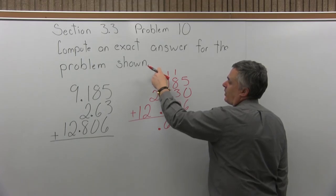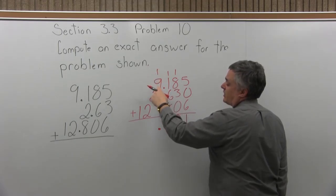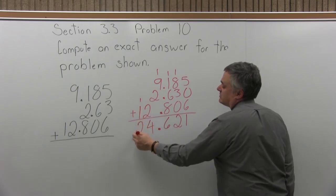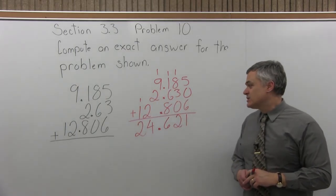I'll have 1 plus 9 is 10, 10 plus 2 is 12, 12 plus 2 more is 14, write the 4, carry the 1, and then 1 plus 1 more is 2. So the final answer is 24.621.